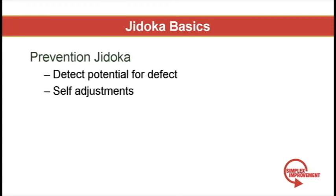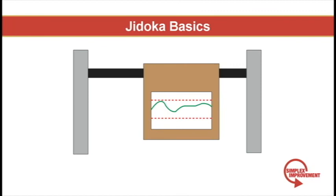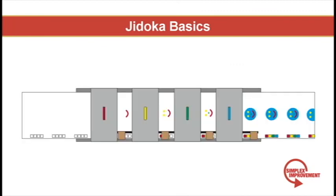In the previous levels of Jidoka, the machine reacted after defects were generated. In prevention Jidoka, the machine takes action before defective products are produced. The machine continuously samples parts and checks for statistical shifts or drifts. When it senses a product moving toward a spec limit, it makes adjustments to correct itself before defects are produced. In this case, an operator is rarely, if ever, needed. Ideally, at this stage, a lot of poka-yoke, or mistake-proofing in English, is built into the machine. An example of this would be to weld down certain adjustments so they physically cannot shift during long hours of operation.